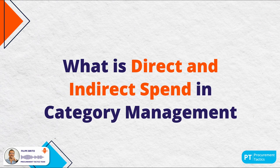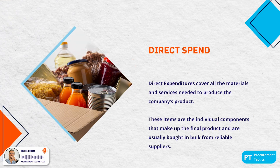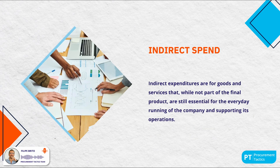There are two main types of expenditures in category management: direct and indirect. Direct expenditures cover all materials and services needed to produce the company's product — usually bought in bulk from reliable suppliers. For example, a restaurant would procure olive oil, dried pasta and produce to use in preparing dishes. Indirect expenditures are for goods and services that are not part of the final product but are still essential for daily operations. What's considered direct or indirect can vary by industry — for instance, IT resources are direct costs in banking and insurance but indirect costs in food and beverage.